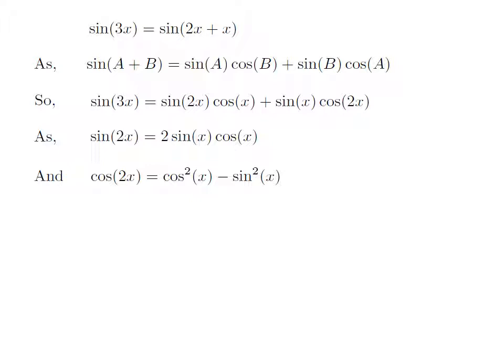And we also know, cosine of 2x is equal to square of cosine of x minus square of sine of x. Again, the proof of this identity has been explained in the video appearing in the upper right corner, and the URL of the video has also been mentioned in the description section.